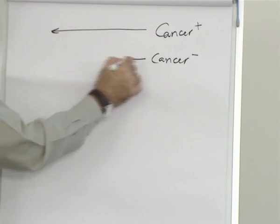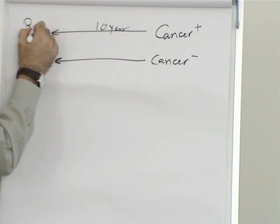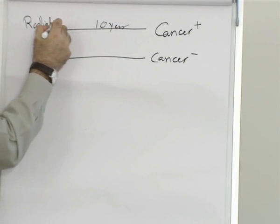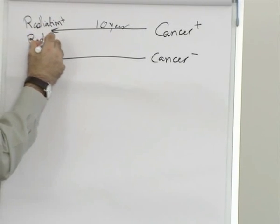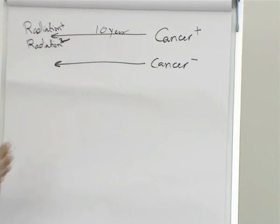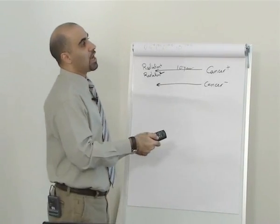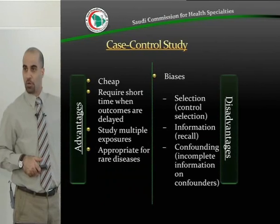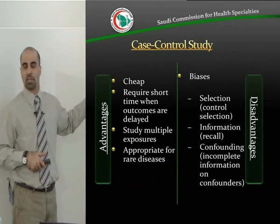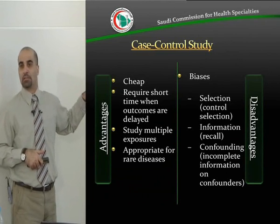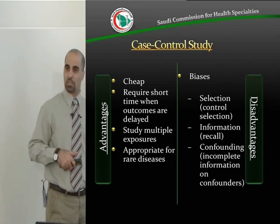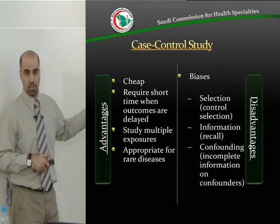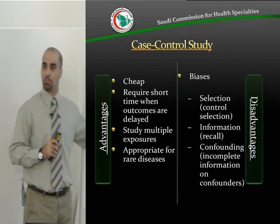You go back to the history 10 years ago to find out who had radiation exposure — radiation positive and radiation negative. So when outcomes are delayed, such as cancer, a case-control study requires only a short period of time. Another advantage is that you can study multiple exposures. If you take cancer and no cancer as your groups, you can look at radiation, maternal smoking, drugs taken, and so on. In a case-control study, you have one outcome but can examine multiple exposures.